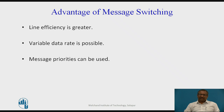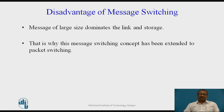With variable data rate, bursty nature of data can also be transmitted. We can also assign message priorities so that higher priority messages can be forwarded first from a node. The disadvantage of message switching is that messages of large size dominate the link and storage — all links between nodes are used by this large message only, and no other messages are allowed. That is why message switching has been extended to packet switching, removing this disadvantage.